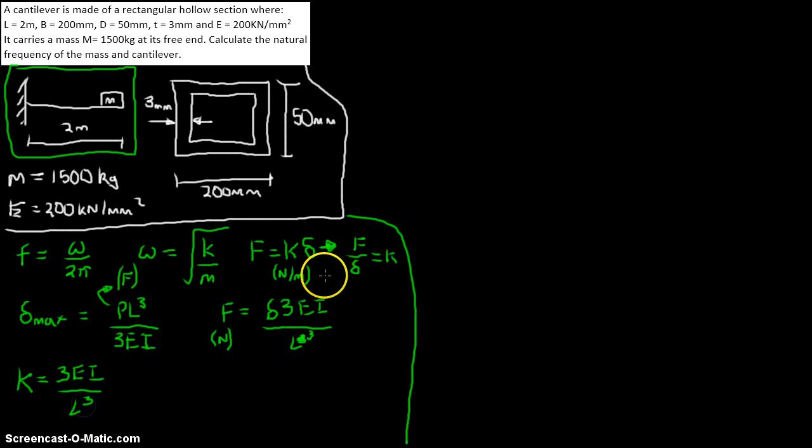I've simply changed this force into a stiffness by using this equation. I know that force divided by displacement is equal to the stiffness. So, I've divided f by a displacement to make it k, and I've divided this side by a displacement, because whatever you do to one side, you must do to the other. So the displacement has cancelled off. So, it's simply become 3EI over L cubed.